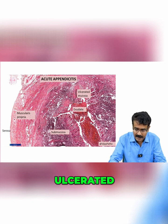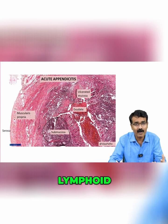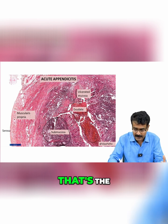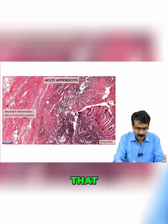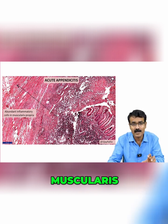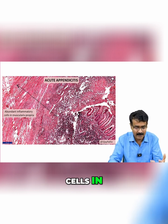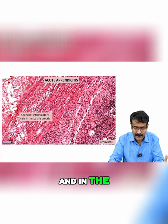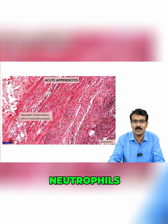That is the ulcerated mucosa. This is the submucosa where you find lymphoid follicles normally; that is the exudate in the lumen. You can see abundant inflammatory cells — at this magnification you can see those tiny little dots in the muscularis externa. These tiny little dots are inflammatory cells in the muscularis propria, and in the higher magnification you can easily make out that these are actually neutrophils.